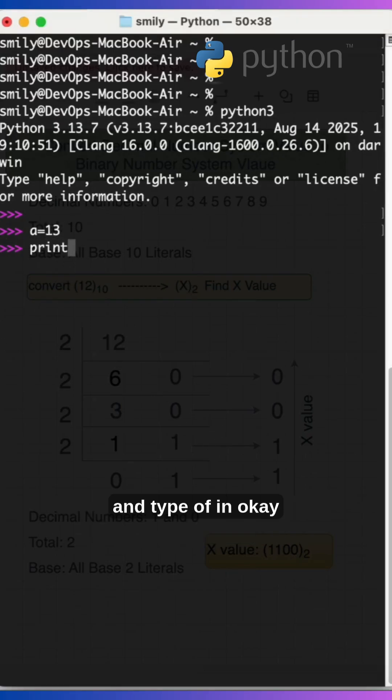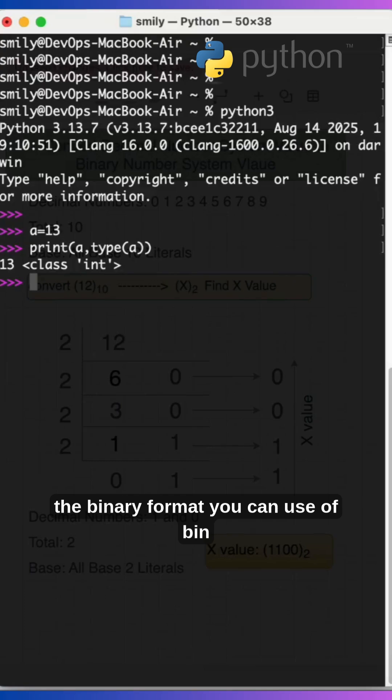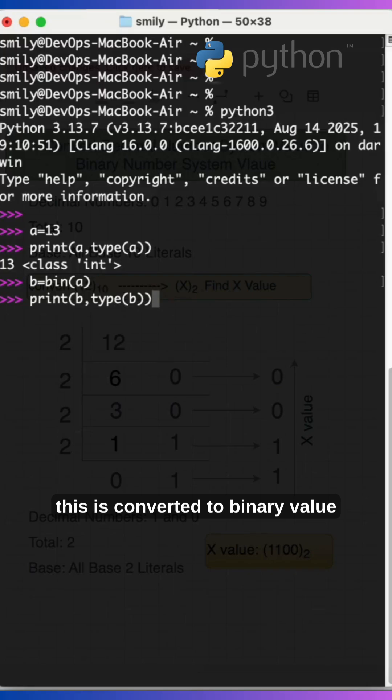You can use the bin function - provide the a value, simple. And you can type the b. This is converted to binary value.